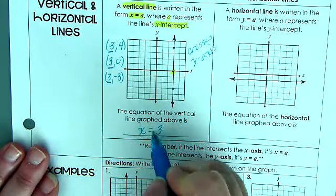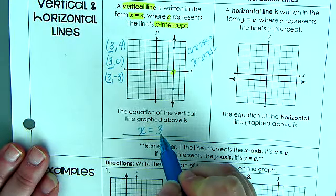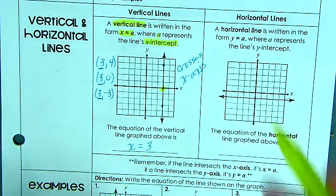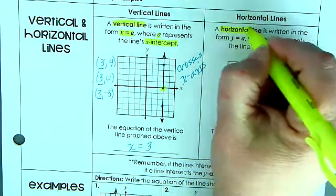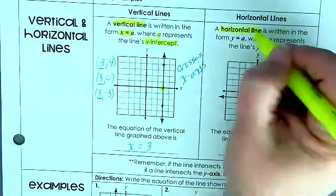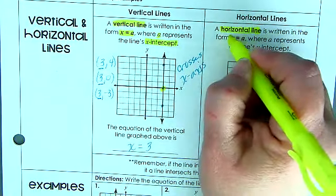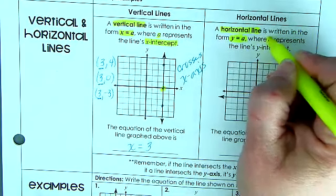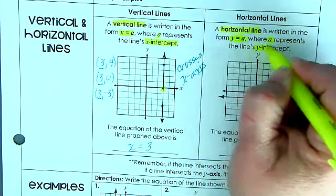Now the only difference when we're looking at a horizontal line is a horizontal line is written in the form y equals a, where a represents the y-intercept.